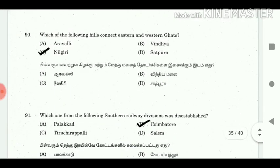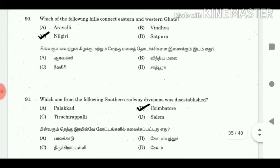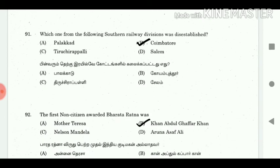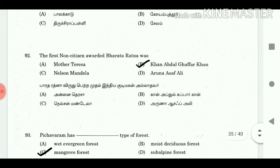90. Which of the following hills connect the Eastern and Western Ghats? Answer: Nilgiris. 91. Which one of the following Southern Railway divisions was disestablished? Answer: Coimbatore. 92. The first non-citizen awarded the Bharat Ratna was? Answer: Khan Abdul Ghaffar Khan.